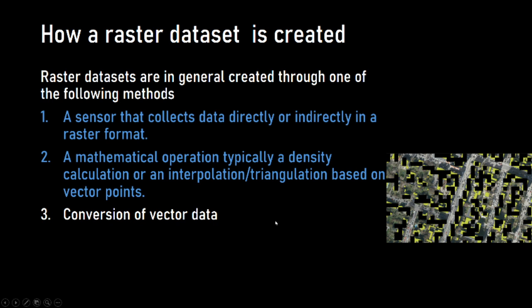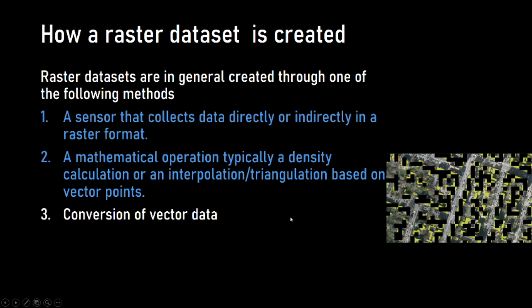Raster data is also often created through the direct conversion of vector data, because if you don't have a sensor generating raster output, you'll typically create vector data and then convert it. This conversion from vector to raster is very common for base data. Finally, lots of raster data is created by doing calculations on other raster data. For example, this is the CORINE European land cover classification. You can download this data from the European Environmental Agency's website as raster — born as a classification of a satellite image — but it's also converted to vector so you can download towns, forests, and so on as vector elements.